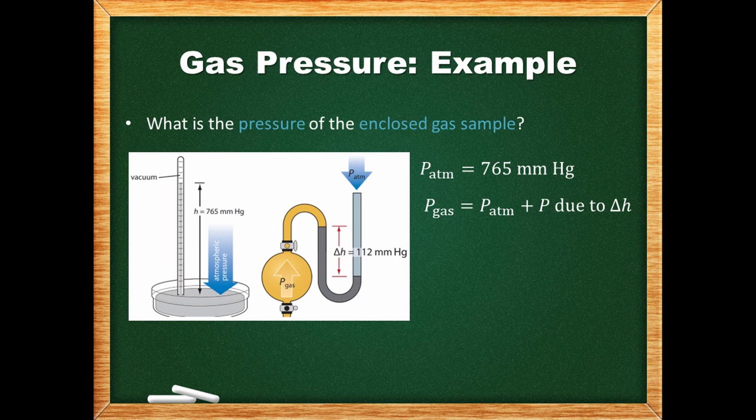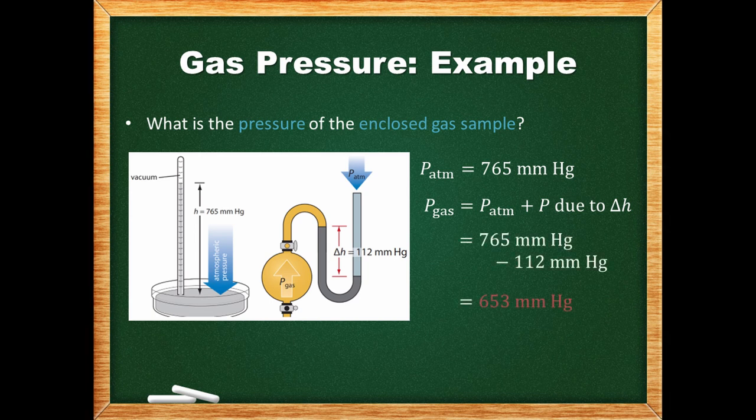Since we can see that the column of mercury has been pushed closer to the enclosed gas sample, the pressure exerted by the atmosphere should be larger than the pressure exerted by the enclosed sample. In other words, the pressure of the enclosed gas should be less than that of the atmosphere. That means we subtract the height difference from the atmospheric pressure to give us the pressure of the enclosed gas sample.